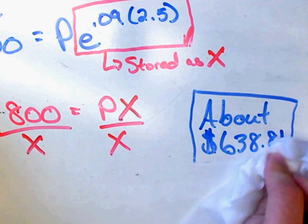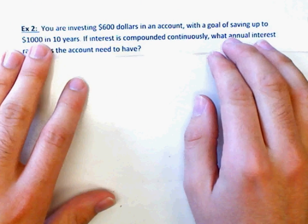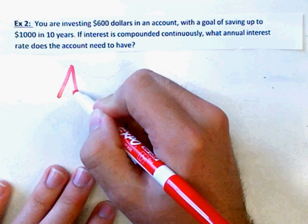So sometimes we're not solving for the principle. In theory, as long as you know the formula, you should be able to solve for any part of it. So I want to do one where we solve for a different part.